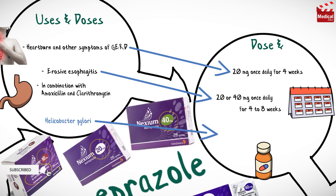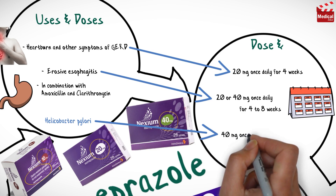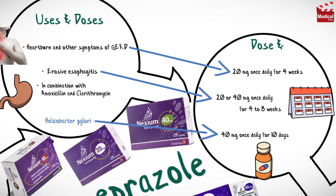For Helicobacter pylori eradication, the usual dose for adults is 40 milligrams once daily for 10 days, in combination with amoxicillin 1000 milligrams twice a day and clarithromycin 500 milligrams twice a day for 10 days.